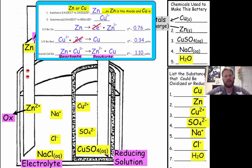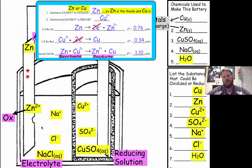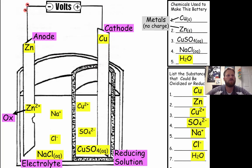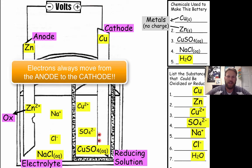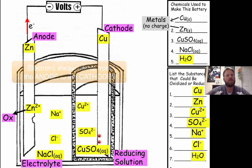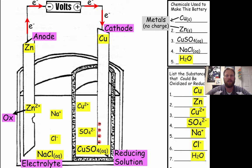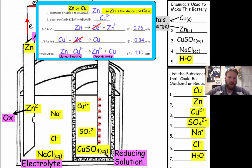The electrons lost at the anode are going to be gained by the cathode, so we have to show the movement of electrons through our battery over to the cathode. The electrons travel from the anode to the cathode. That's another thing you need to label on your diagram — label the electron flow just like this. We're going to get a buildup of electrons on the cathode.